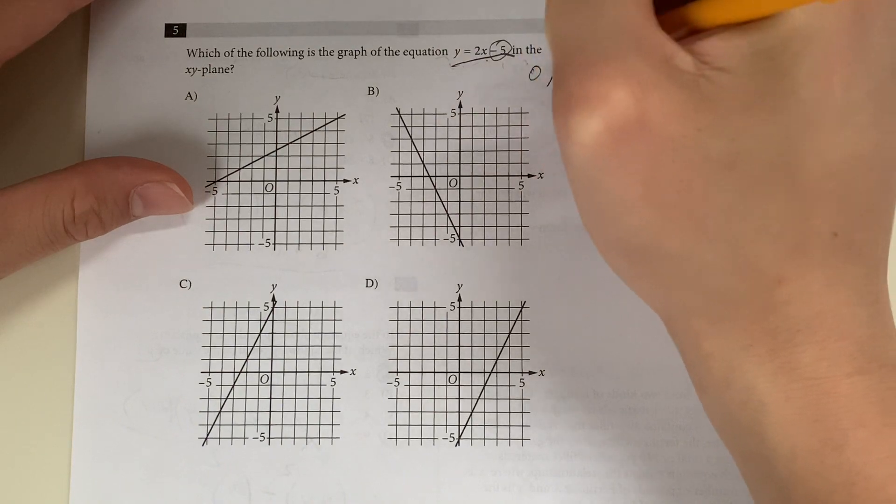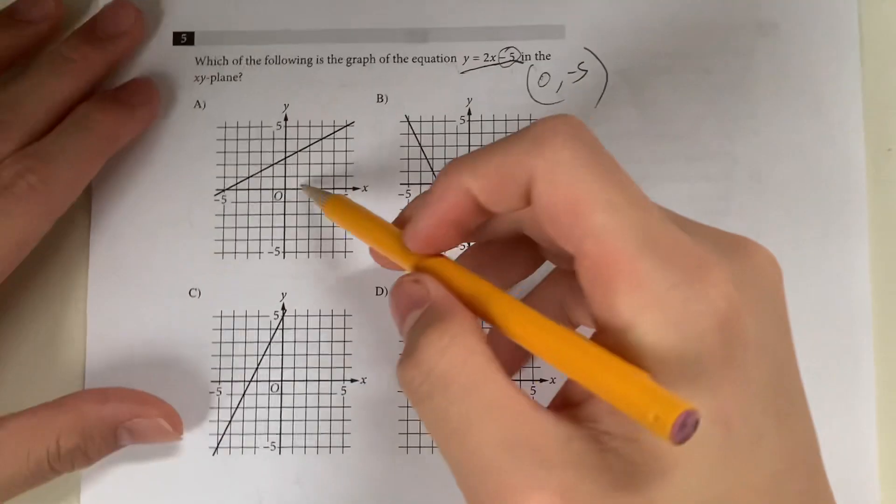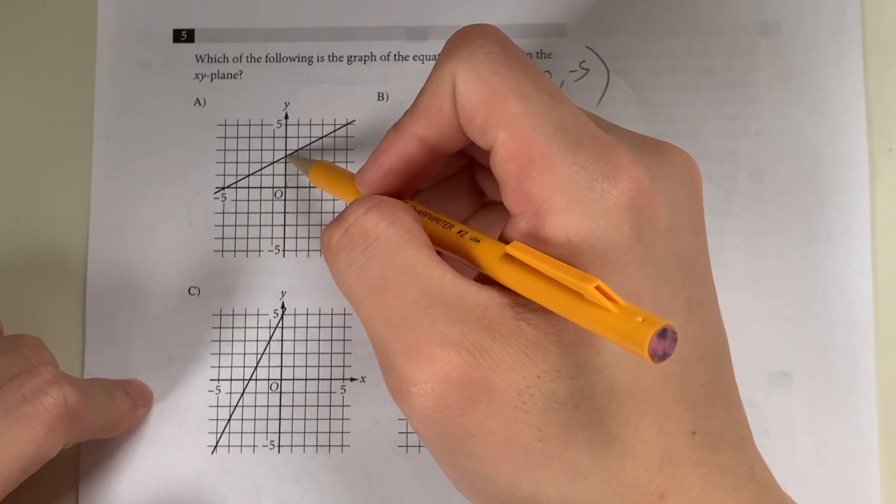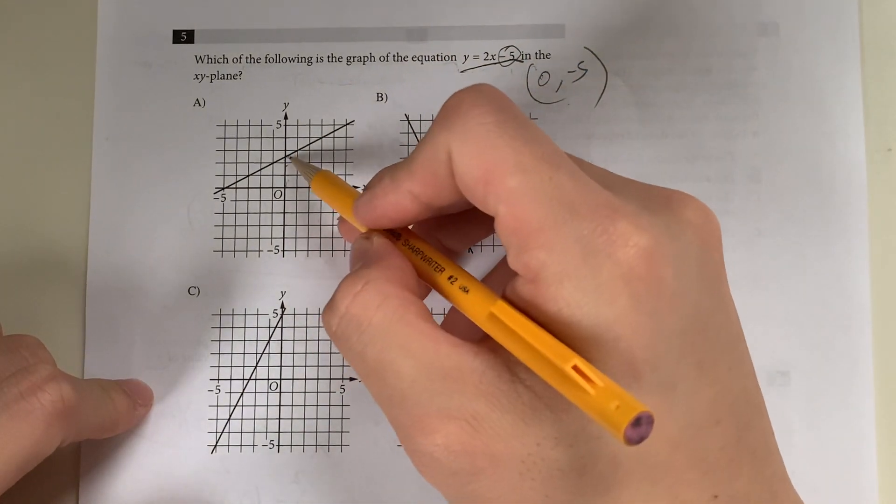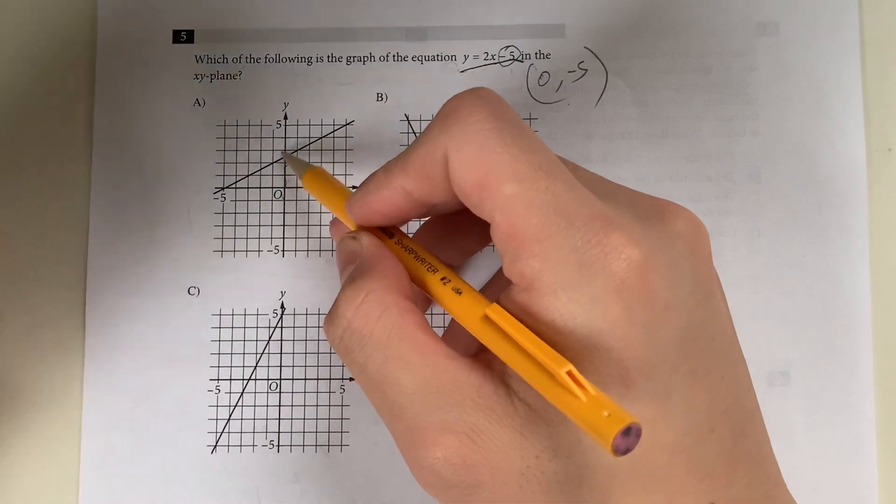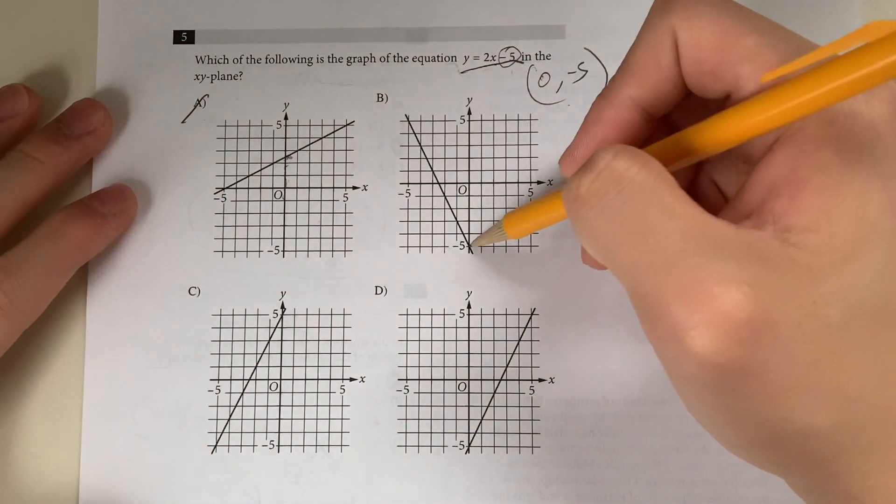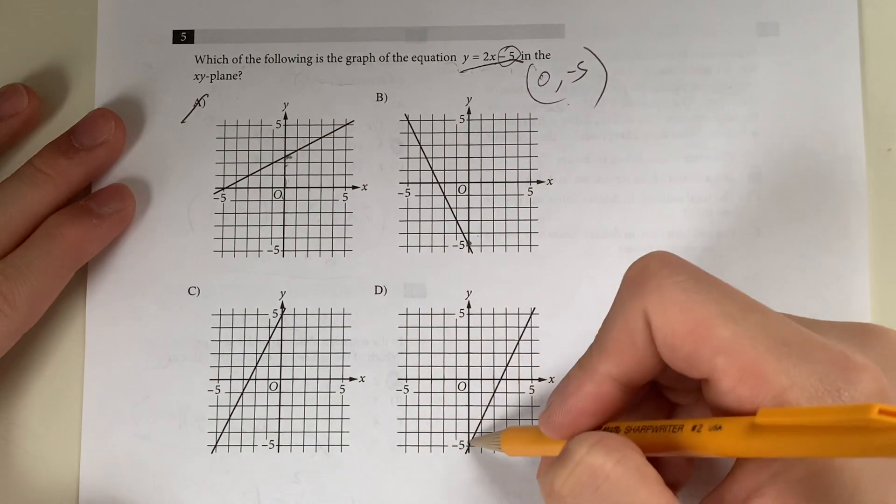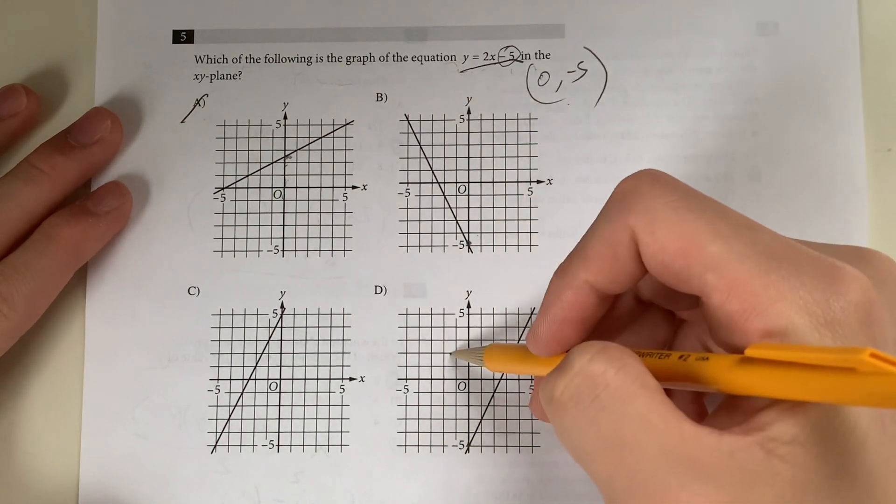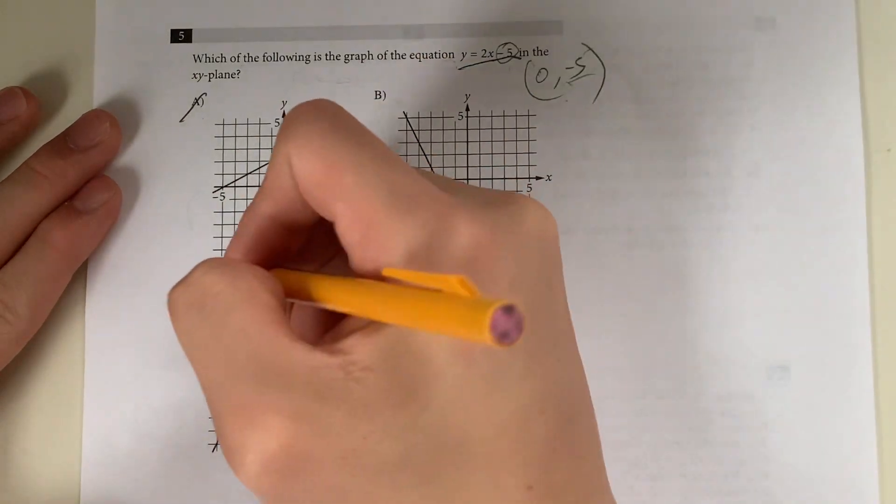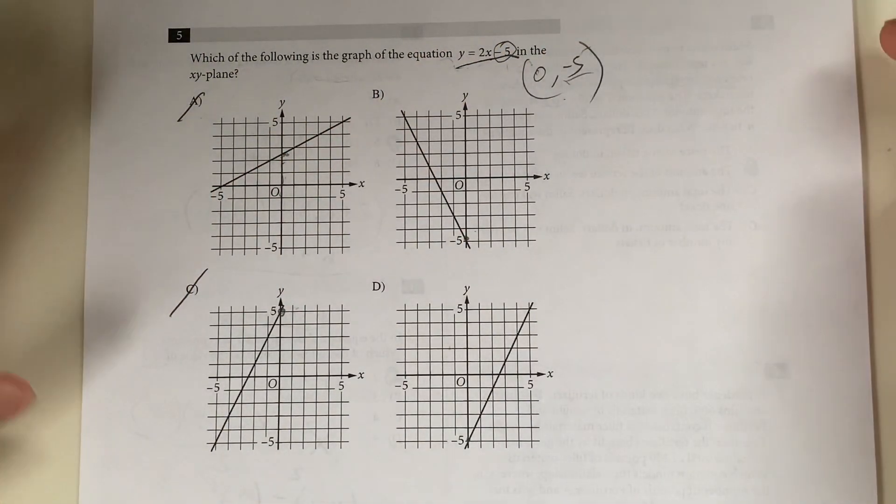It has a y-intercept of negative 5, meaning it's going to be 0, negative 5 as the y-intercept. Looking at graph A, you can tell that it doesn't have a y-intercept of negative 5. Looking at this, y-intercept of 5 right down here, and y-intercept of negative 5 right down here. So B and D are your choices because C has a y-intercept of 5, not negative 5.